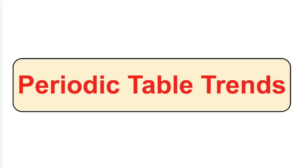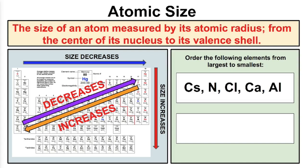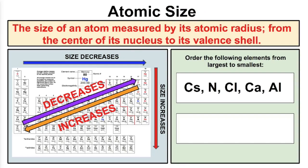Hey, you guys, this is Mr. Millings and today we're gonna learn about trends in the periodic table of elements. Now if you remember from an earlier video we talked about Dmitry Mendeleev, the creator of the very first periodic table of elements. In that video we talked about how Dmitry stated that if you arrange the atoms in order of their increasing atomic weights then we start to see recurring patterns in their physical and chemical properties. And that's what we're gonna talk about today — the different trends in the periodic table.